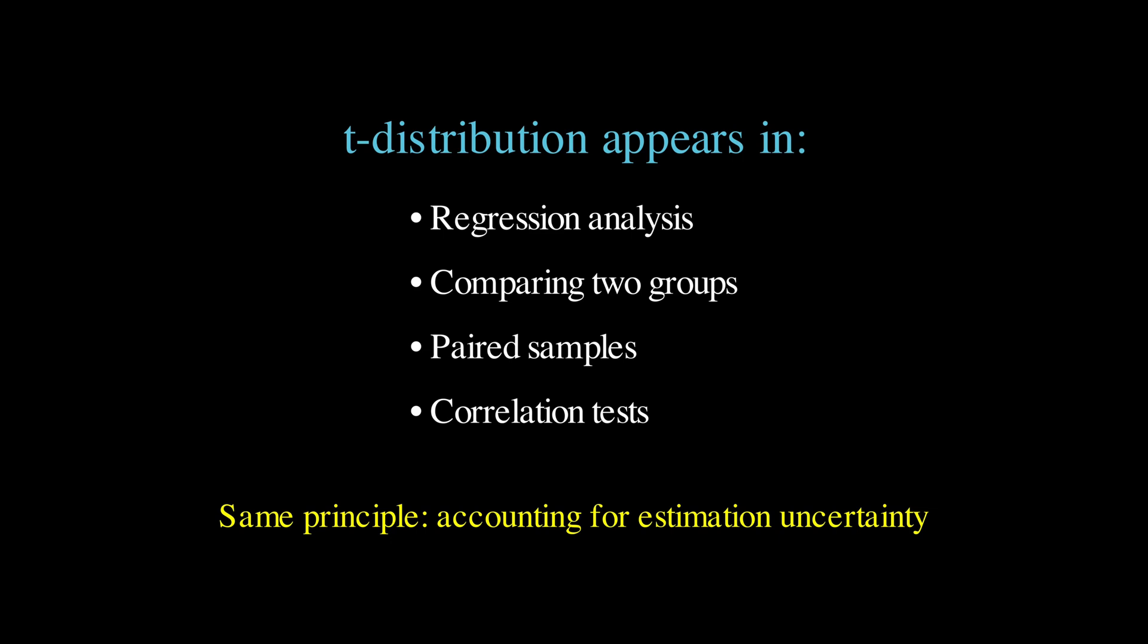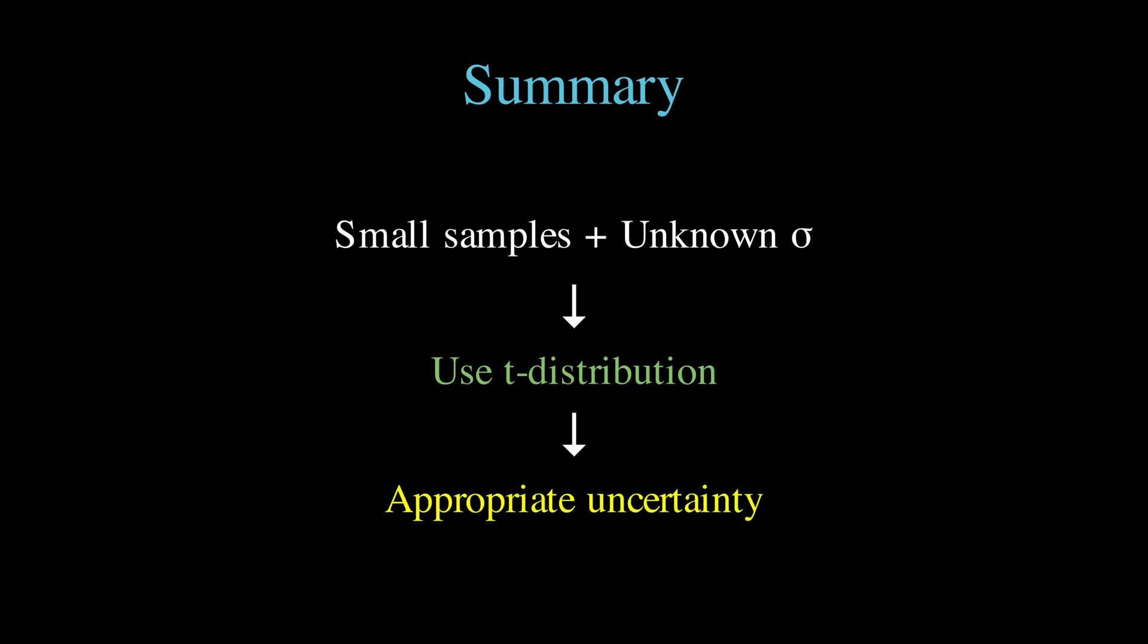This is why understanding the t-distribution isn't about memorizing when to use it, but really grasping the fundamental idea that estimation introduces uncertainty, and our statistical methods need to reflect that. To summarize what we have learned, the t-distribution is your friend when you are working with small samples and you need to estimate the population standard deviation from your data, and it automatically gives you the right amount of caution by having heavier tails than the normal distribution, with the effect being strongest for small samples and gradually disappearing as your sample size increases.